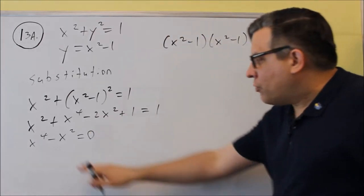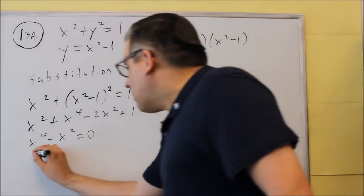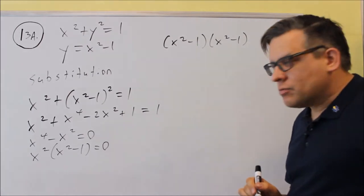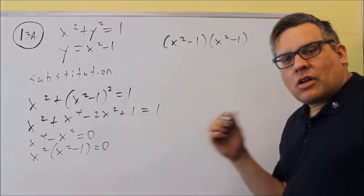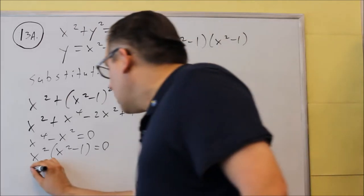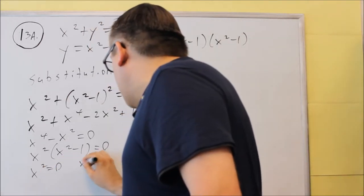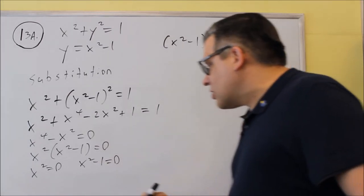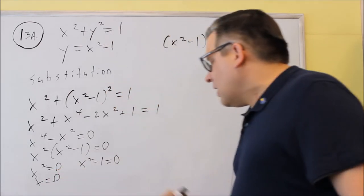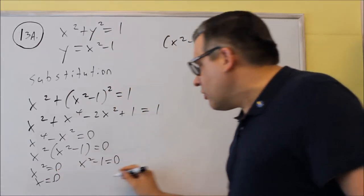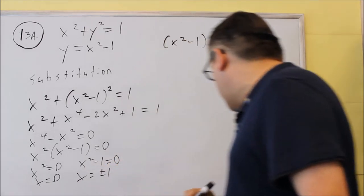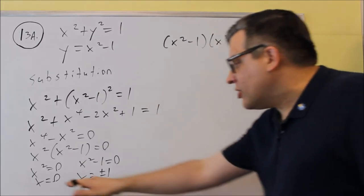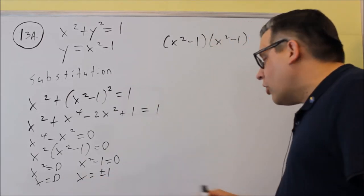We end up with x to the fourth minus x squared equals zero. We take out a common factor of x squared to get x squared times (x squared minus 1) equals zero. Setting each factor equal to zero: x squared equals zero gives x equals zero; x squared minus 1 equals zero gives x equals plus or minus 1. So we get three x values: zero, 1, and negative 1.